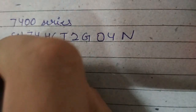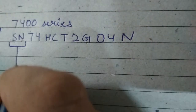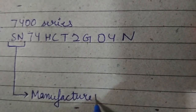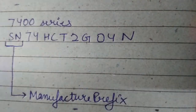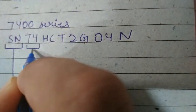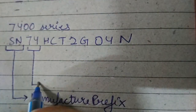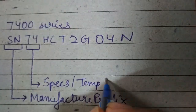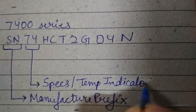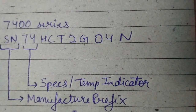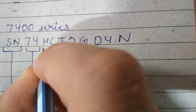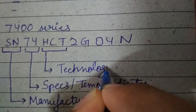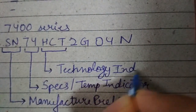The letters SN before 74 are manufacturing prefixes. The number 74 is the specifications and temperature indicator. HCT represents the technology indicator.